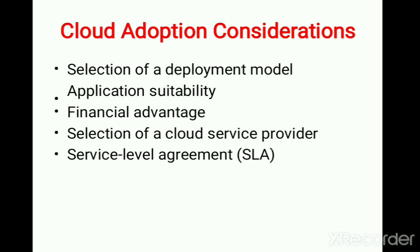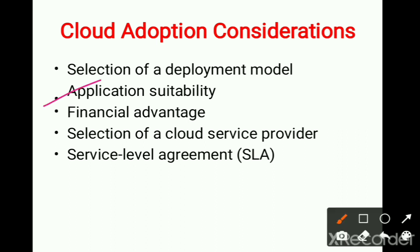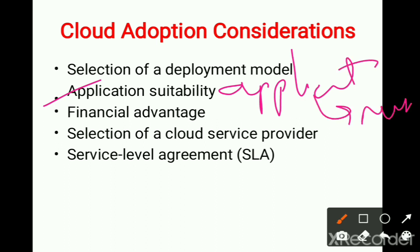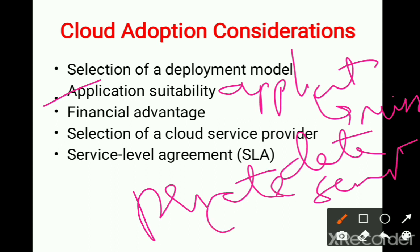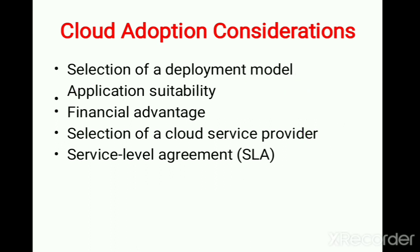The second consideration is application suitability. You need to check what type of application you are running to decide which cloud to adopt — whether it is a mission-critical application or for public services. If the application is mission-critical, meaning the data is very sensitive and cannot be compromised, you need to go with the private cloud. Military systems, for example, don't use public clouds and don't even go for hybrid clouds — they use community clouds.